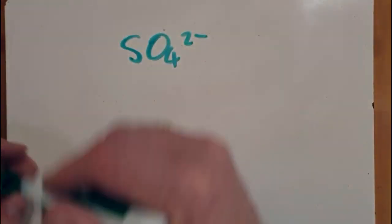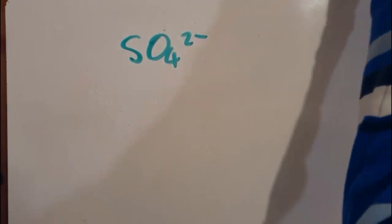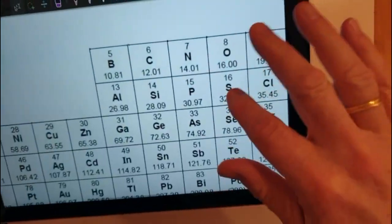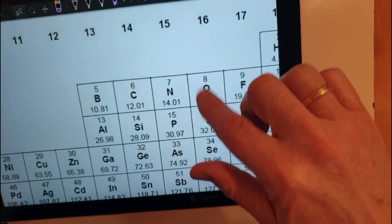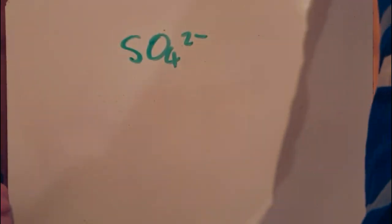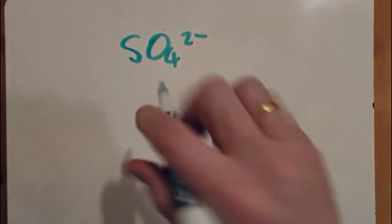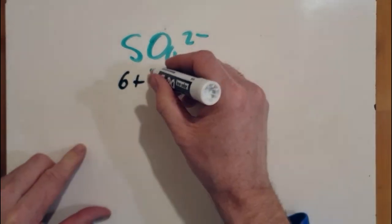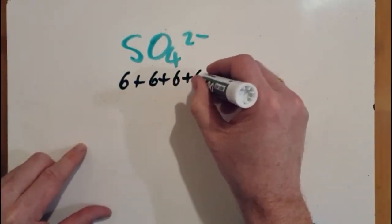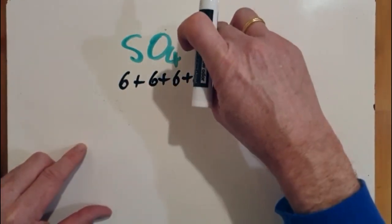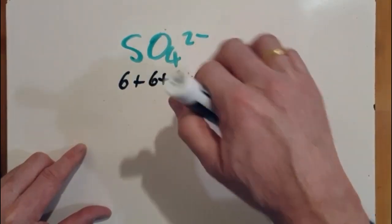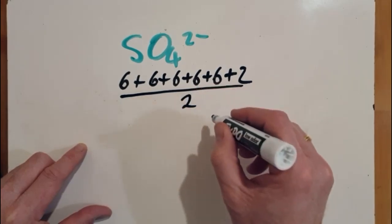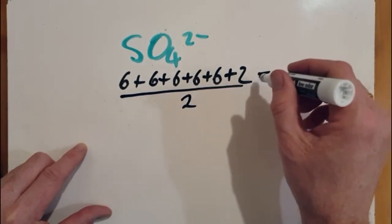All right, first of all you need to know how many valence electrons we're talking about to do the Lewis structure. So you have to consult a periodic table. Both sulfur and oxygen are in group 16, so they have six valence electrons. So I've got six from the sulfur and then four more sixes from the oxygen and two extra electrons. Electrons are negative, there's a two minus charge there. And I'm actually really interested in the pairs of electrons, electron pairs. So that gives me 16.